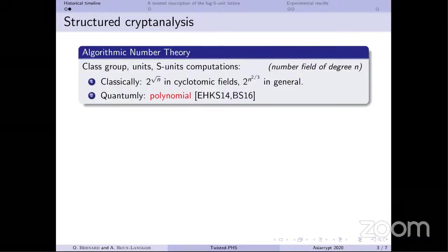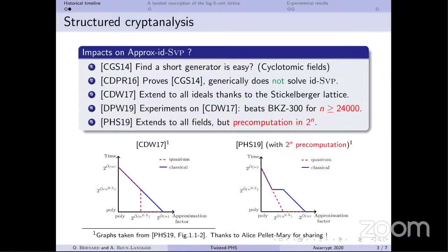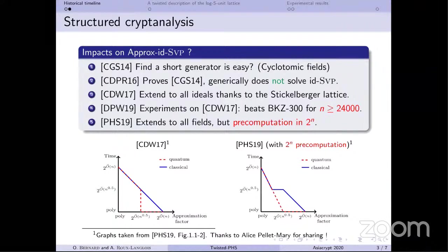The first structured cryptanalysis came from algorithmic number theory: quantum polynomial-time algorithms can compute class groups or S-units, whereas classically this should take exponential time — e.g., 2^{sqrt(N)} in cyclotomic fields. This gave rise to a long line of works, starting from a technical note claiming that finding a short generator was easy in cyclotomic fields. Our work is mostly based on the PHS work by Pellet-Mary, Hanrot, and Stehlé in 2019, who extended this cryptanalysis to all fields with an exponential precomputation.